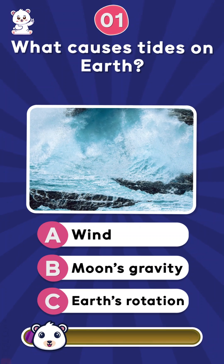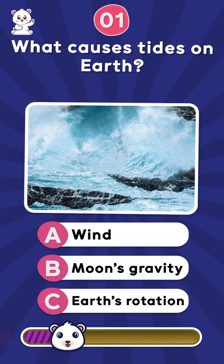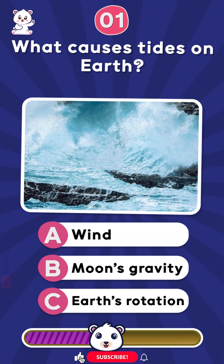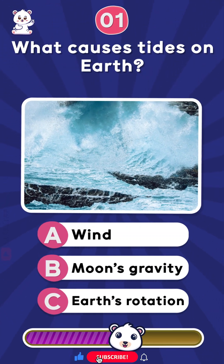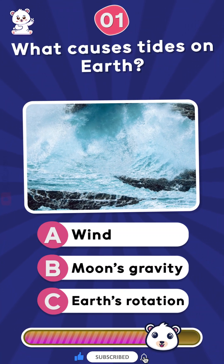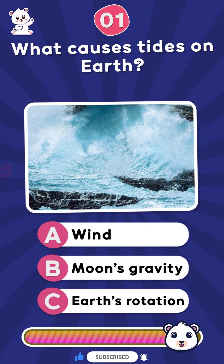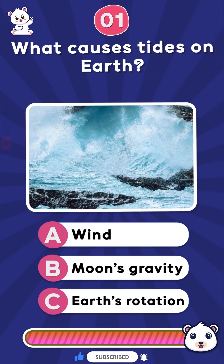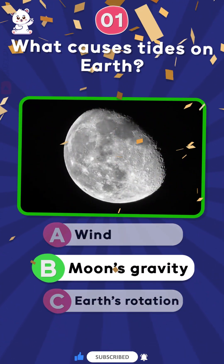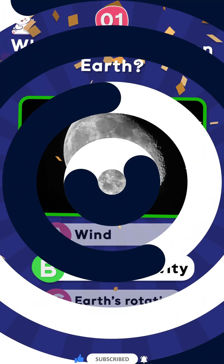What causes tides on Earth? Wind, Moon's gravity, or Earth's rotation? Correct! The Moon's gravity causes tides.